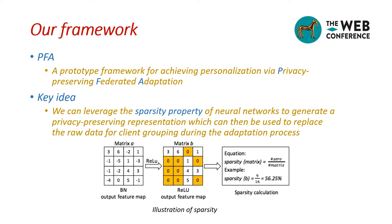In order to accomplish federated adaptation, one key challenge is that raw data in each client cannot be outsourced due to privacy concerns. We propose PFA, a prototype framework for achieving personalization while preserving privacy in federated adaptation. The key idea behind PFA is leveraging the sparsity property of neural networks to generate a privacy-preserving representation, which can then be used to replace raw data for client grouping during adaptation. Here, sparsity is defined as the ratio of zero elements in a matrix — for example, 9 zero elements out of 16 gives a sparsity of 56.25%.